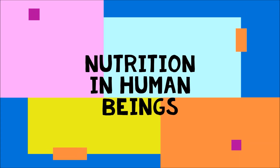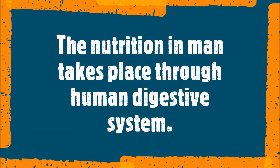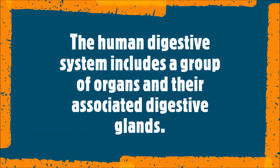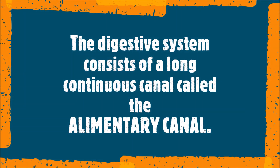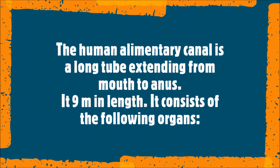Now let's learn about nutrition in human beings. Nutrition in humans takes place through the human digestive system, which includes a group of organs and their associated digestive glands. The digestive system consists of a long continuous canal called the alimentary canal, which extends from the mouth to the anus and is 9 meters in length.